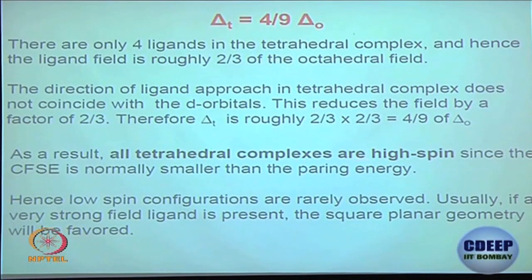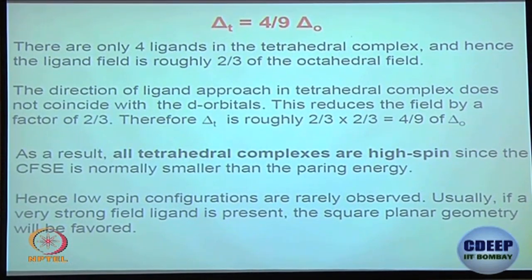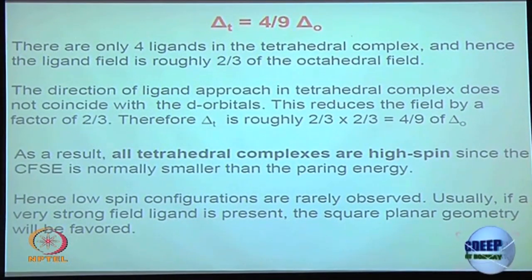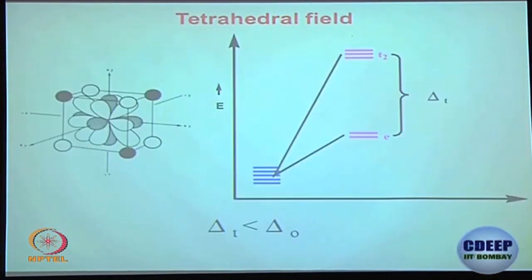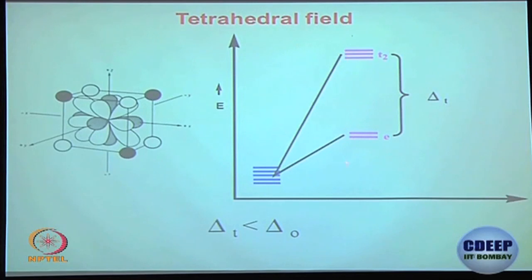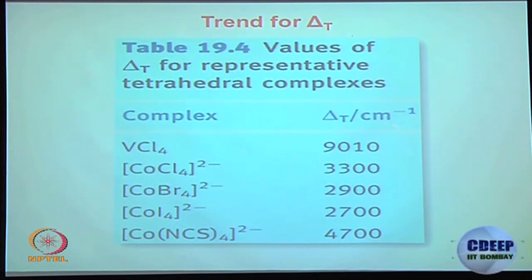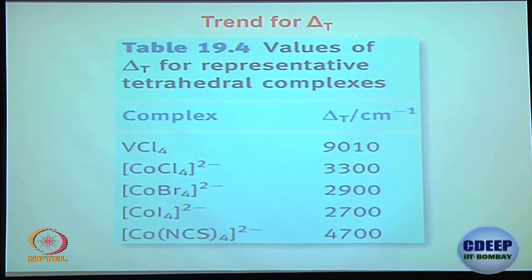All tetrahedral complexes are high spin because the splitting is always small. To summarize the difference: octahedral has T2g lower and Eg up; tetrahedral has E lower and T2 up — not Eg, not T2g. Delta_O is always numerically much higher, often 20,000–25,000 cm⁻¹, whereas Delta_T is always much smaller.